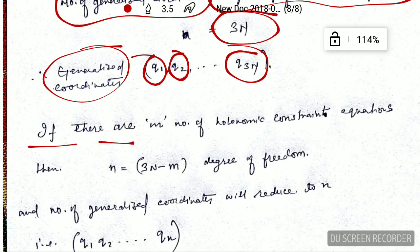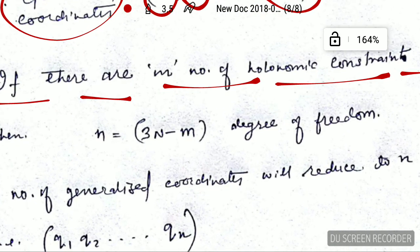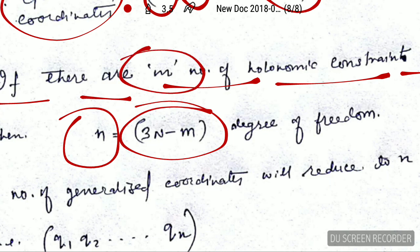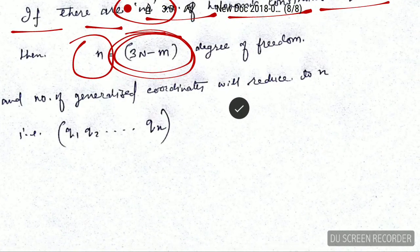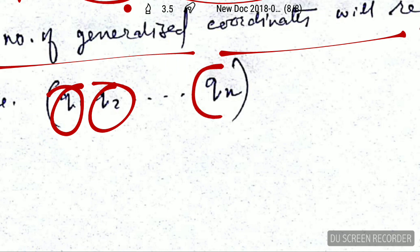Now, if there are m number of holonomic constraints equations, then the degree of freedom will reduce. It will now be denoted by small n and will become equal to three n minus m. That means we subtract the number of holonomic constraint equations from the actual degrees of freedom. So three n minus m is now the actual or effective degrees of freedom.